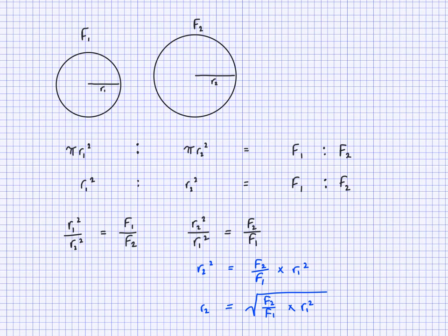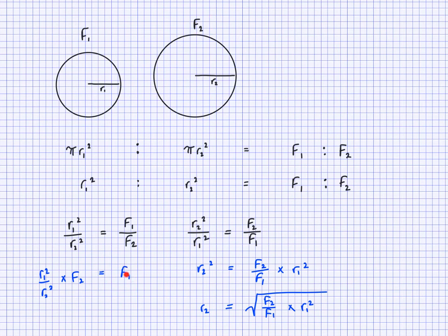If you're looking for F1, use R1²/R2² = F1/F2 and rearrange: F1 = (R1²/R2²) × F2. So square the two radii, divide them, then multiply by the known frequency to get the unknown frequency. I'll show you how this works with examples, but this is the main idea and you need to know it well.